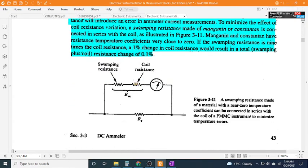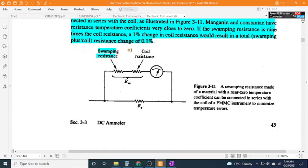Figure 3-11 shows a swamping resistance made of a material with a near zero temperature coefficient can be connected in series with the coil of a PMMC instrument to minimize temperature errors.